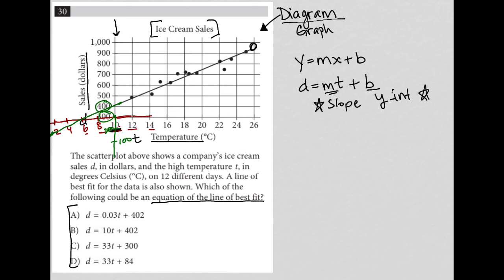But when I look at the answer choices, my options for a y-intercept are 402, 384. Well, I've just proven that it can't be either of these. So choice D must be the best answer, 84 for the y-intercept.